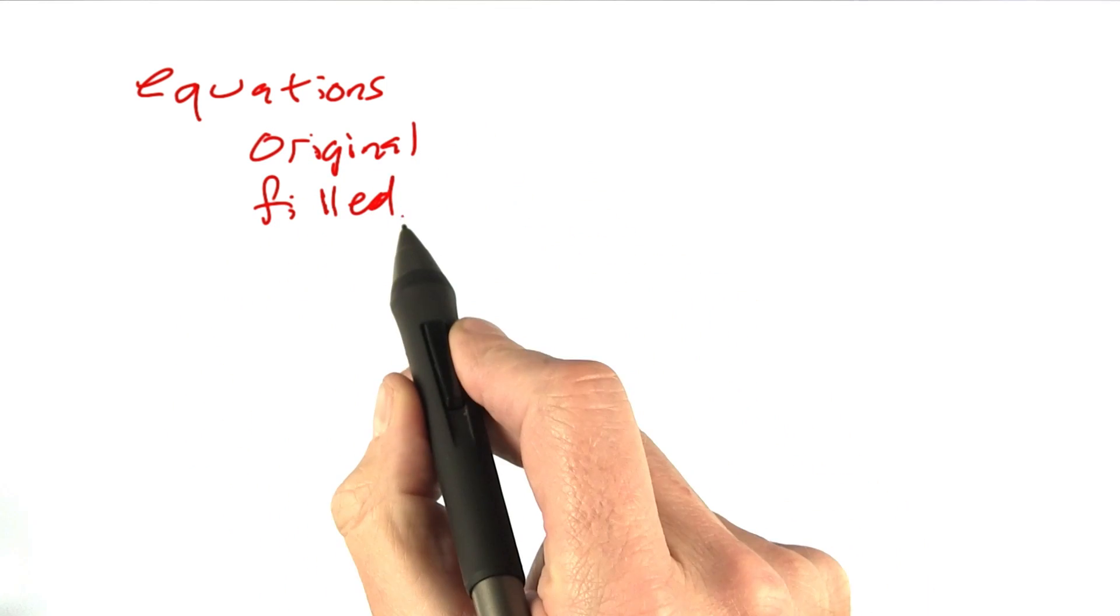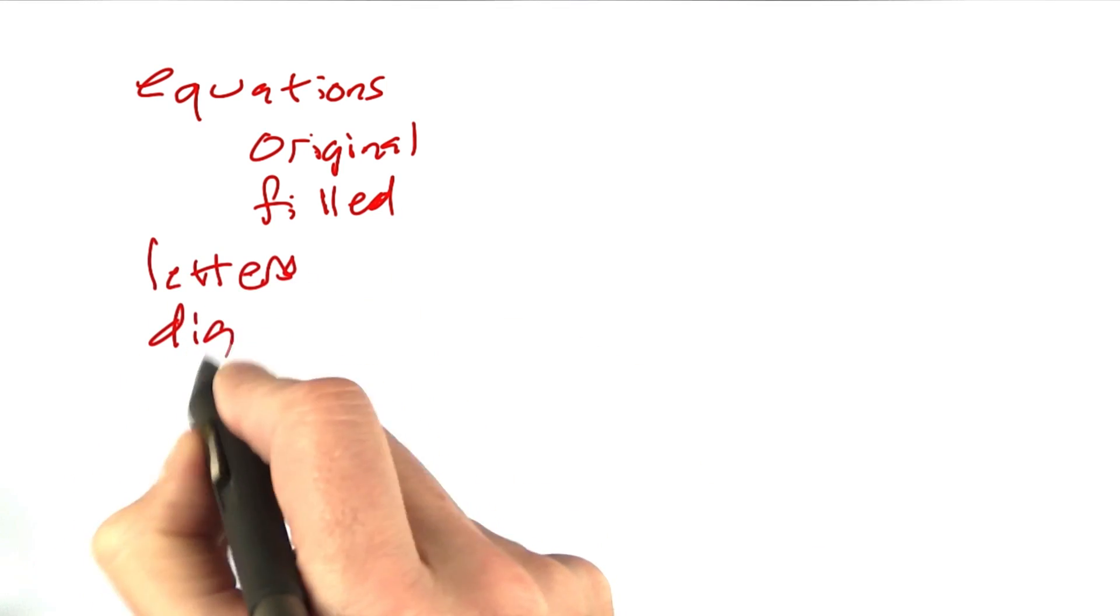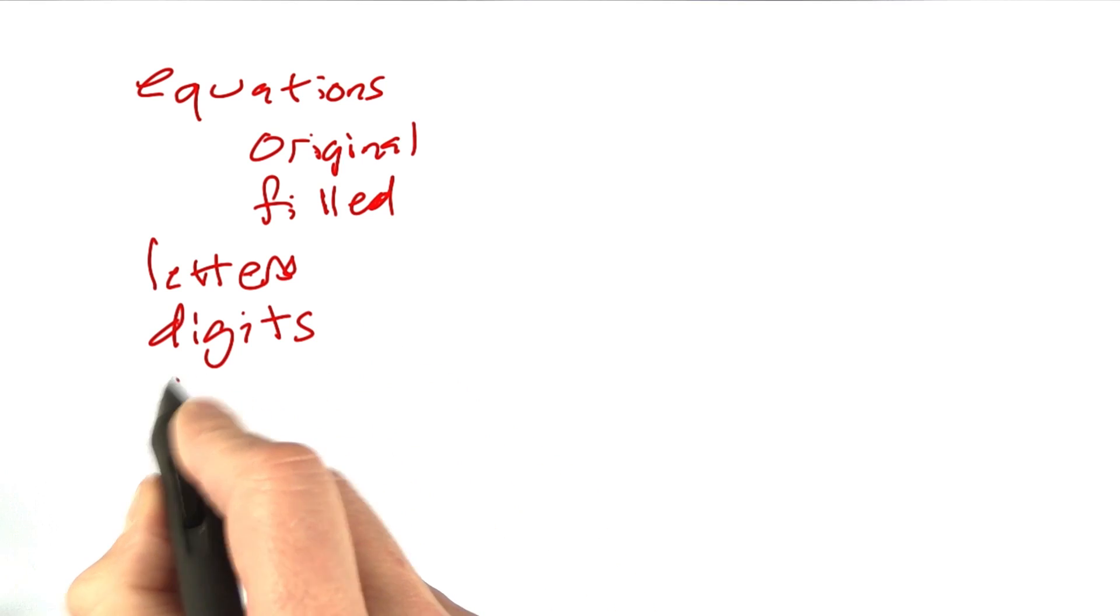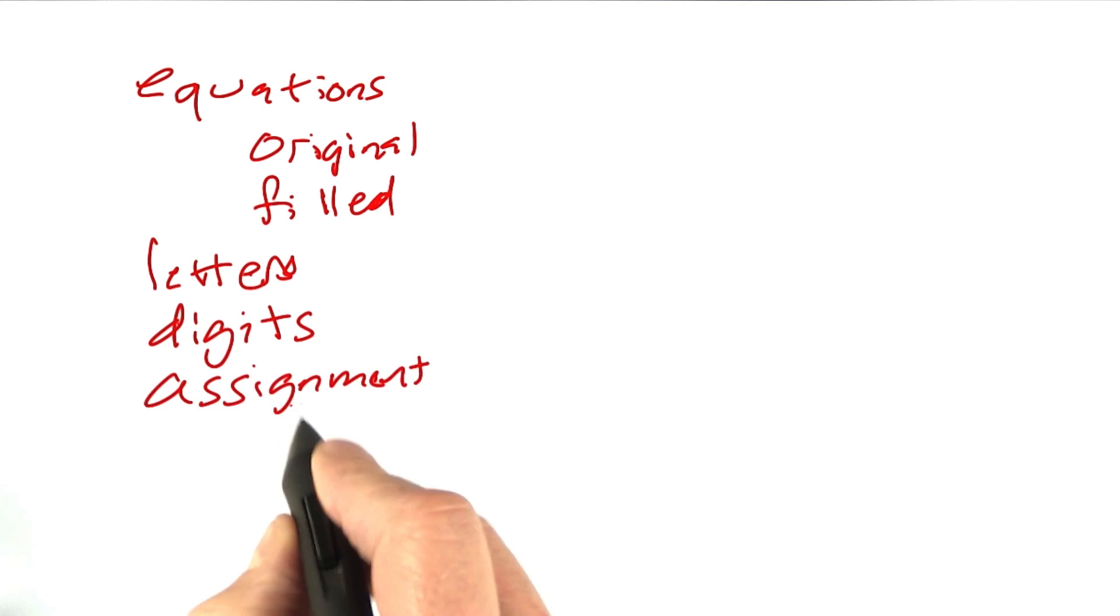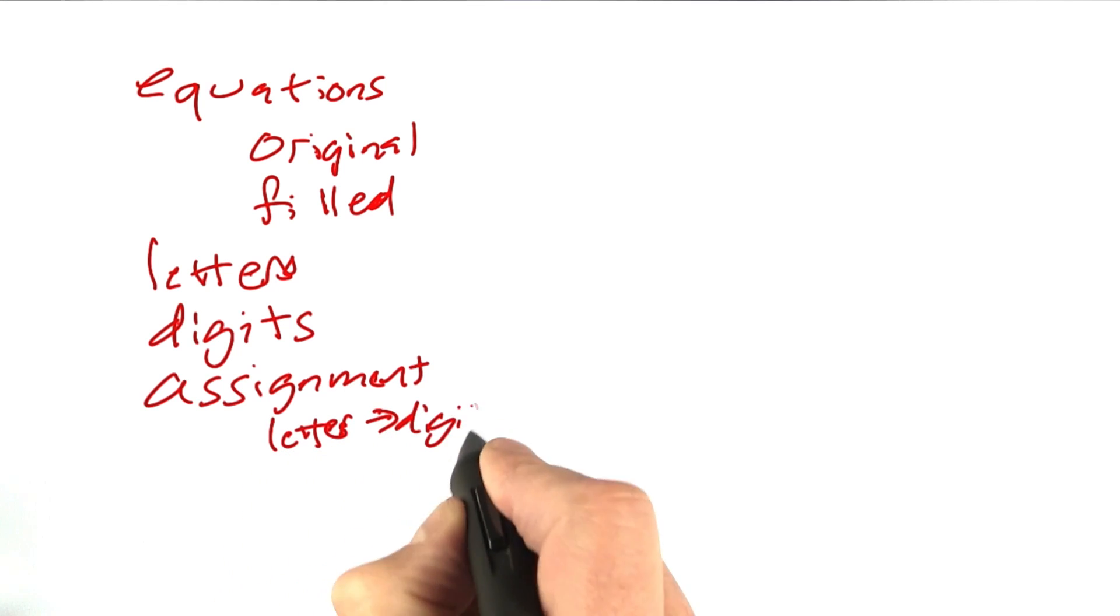The original has letters, the filled in has digits. Letters and digits are concepts we have to deal with. And the assignment of a letter to a digit or a set of those is also a concept we have to deal with. And I think that's pretty much it.